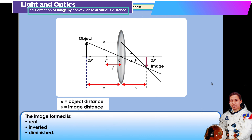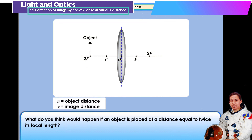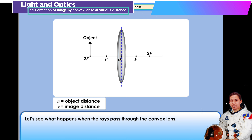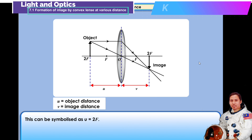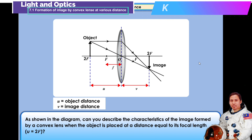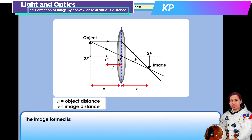What would happen if an object is placed at a distance equal to twice its focal length? Let's see what happens when the rays pass through the convex lens. The image formed is real, inverted, and the same size as the object. This can be symbolized as u = 2f. Can you describe the characteristics of the image formed by a convex lens when the object is placed at a distance equal to twice its focal length? The image formed is real, inverted, same size as the object.